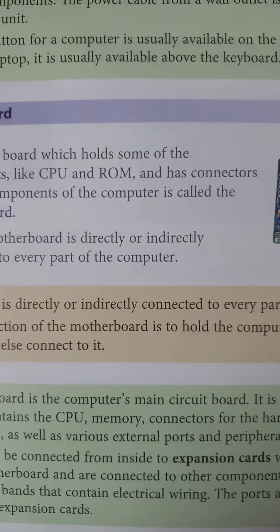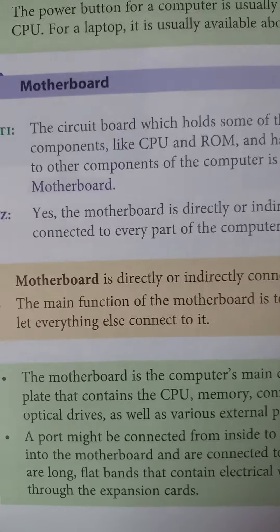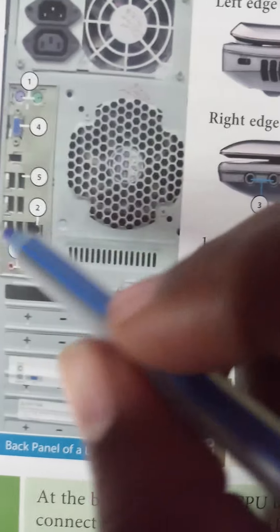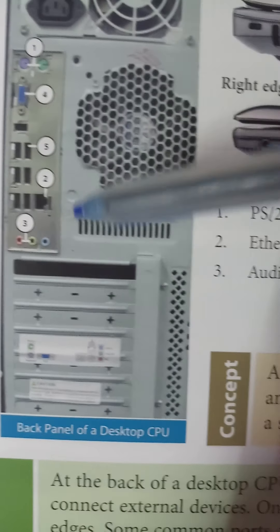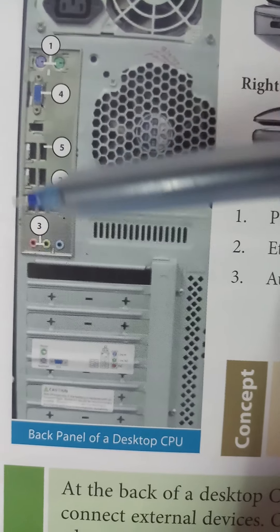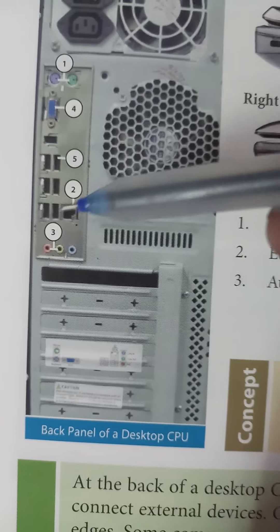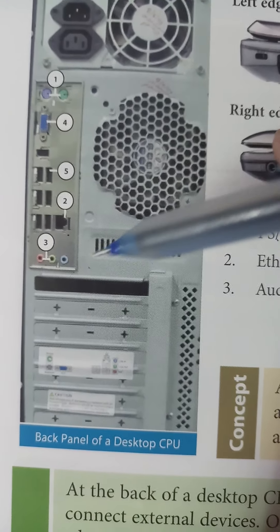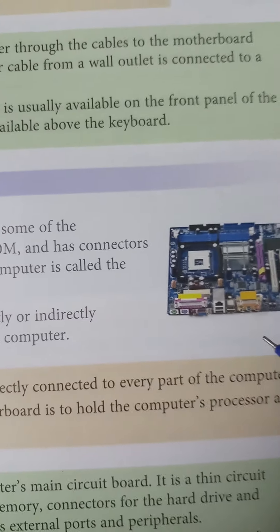A port may be connected from inside to expansion cards which are plugged into the motherboard and connected to other components by cables — long flat bands that contain electrical wiring. The ports are controlled through the expansion cards. Here you can see the expansion cards on the motherboard. The keyboard, mouse, and VGA port are connected to the motherboard directly through these expansion cards.